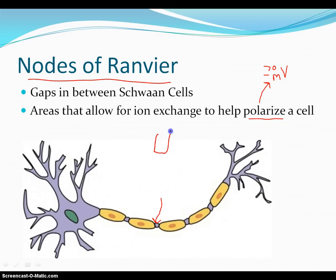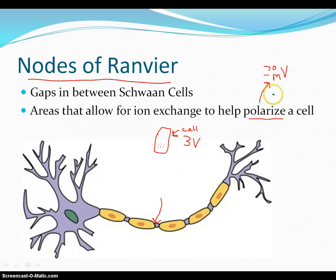A cell phone runs on about 3 volts of power, and each cell in your body has the ability to produce up to 70 millivolts of power. So you can actually do some simple math using the metric system and figure out how many nerve cells it would take to power a cell phone. It wouldn't actually be that many compared to how many nerve cells you have in your body. So your body actually runs on a lot of voltage at any given time.